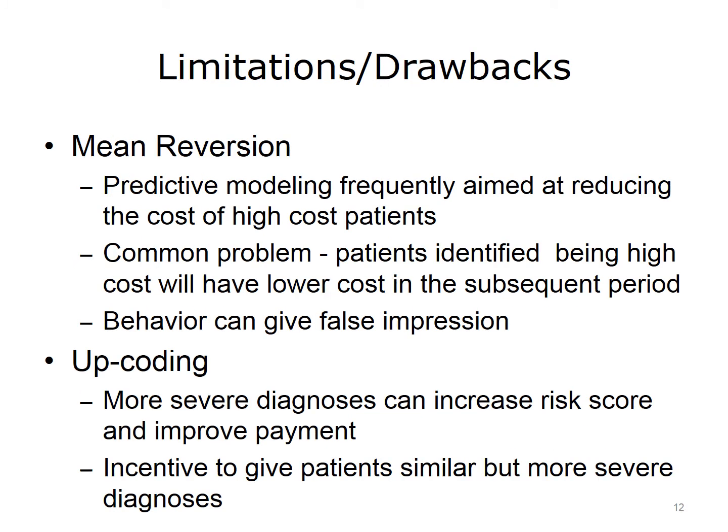There are a couple of distinct limitations to predictive modeling. The first is mean reversion. Because predictive modeling is frequently aimed at reducing the cost of high-cost patients, patients who are identified as being high-cost will tend to have lower cost in the subsequent period. This behavior, referred to as mean reversion, can give the false impression that an intervention applied to these patients has reduced costs, when in fact some reduction may have occurred regardless of any intervention. A drawback of risk adjustment is that it can lead to upcoding — because more severe diagnoses can increase risk scores and improve payment through risk adjustment, there is an incentive to give patients similar but more severe diagnoses or codes.